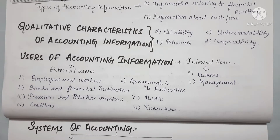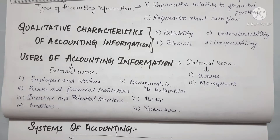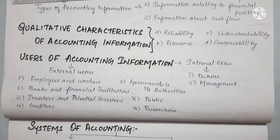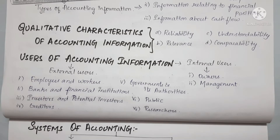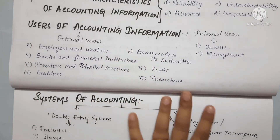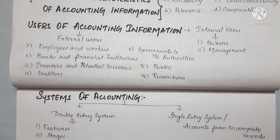The second characteristic is relevance — information must be relevant for decision making. Third is understandability — information and users must be able to understand it. Fourth is comparability — this includes intra-firm comparison and inter-firm comparison.